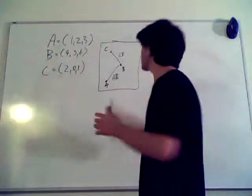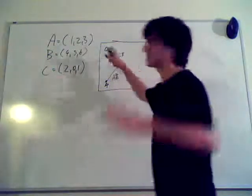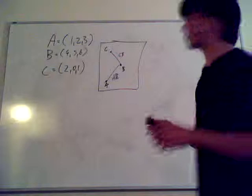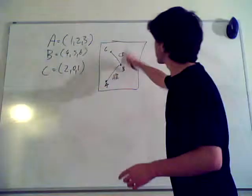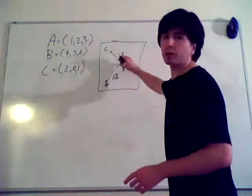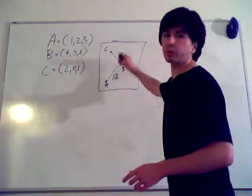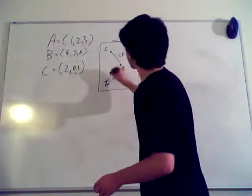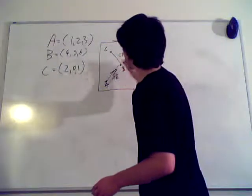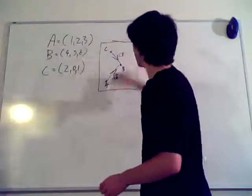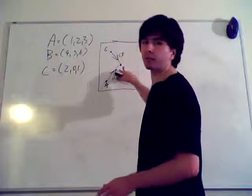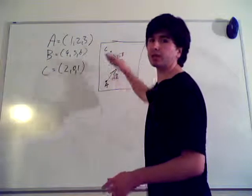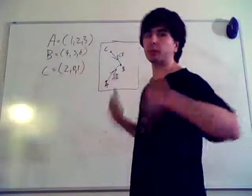So let us do a cross product. First of all, let us find AB and CB. Very important: you have to go from one point, because this is going to be your normal. That's why you have to go in this direction and this direction — you have to go AB and CB. Not BA. Muy importante.